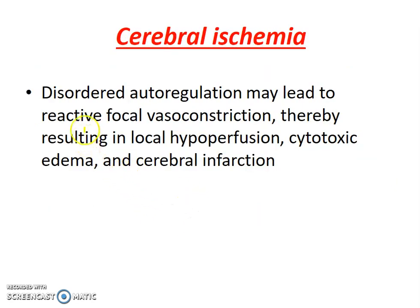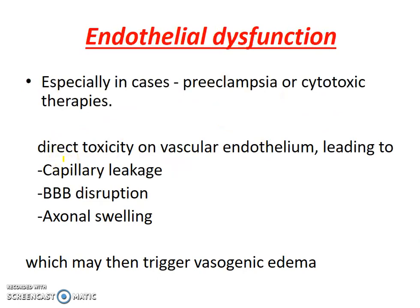Second is cerebral ischemia. The disordered autoregulation may lead to reactive focal vasoconstriction, resulting in local hypoperfusion and cytotoxic edema, which might lead to infarction. Third is endothelial dysfunction. In some clinical conditions associated with PRES, like preeclampsia or cytotoxic therapy, direct toxicity on vascular endothelium might lead to capillary leakage, blood-brain barrier disruption, or axonal swelling, which may trigger vasogenic edema.